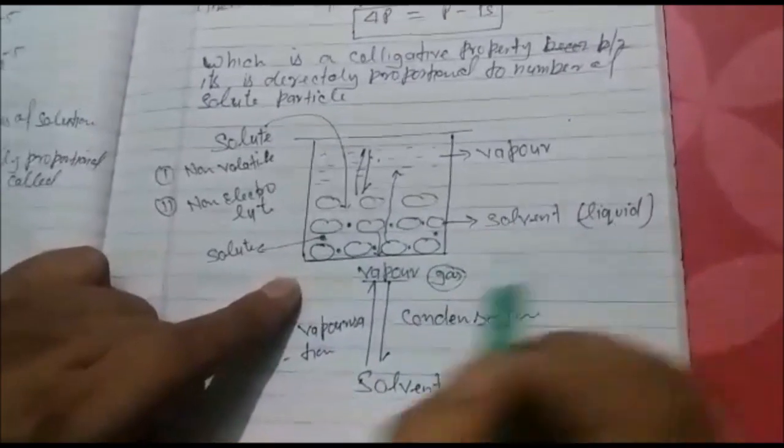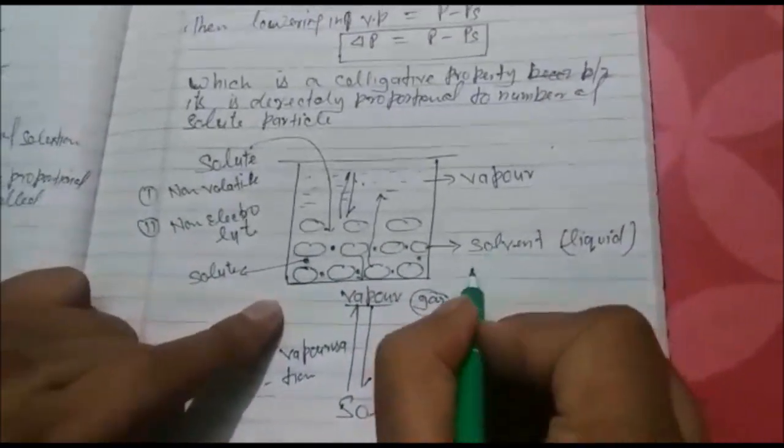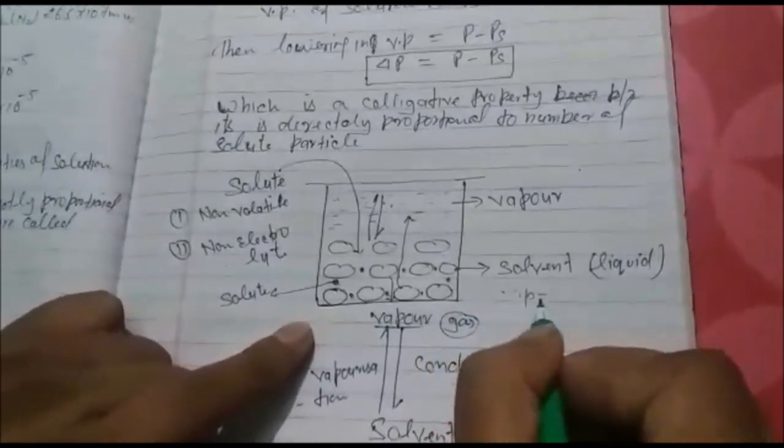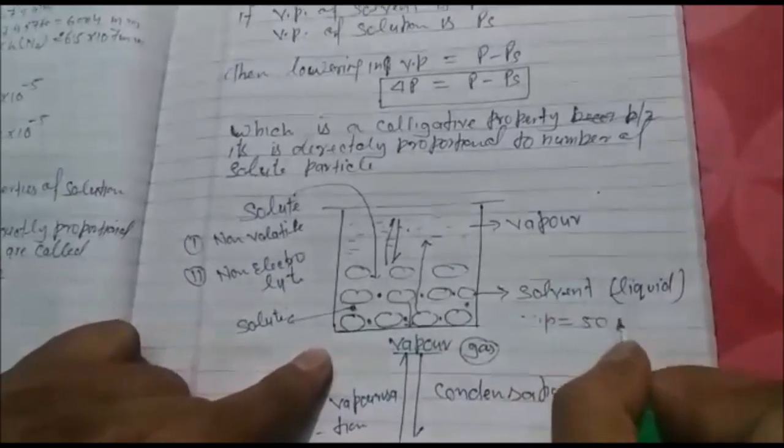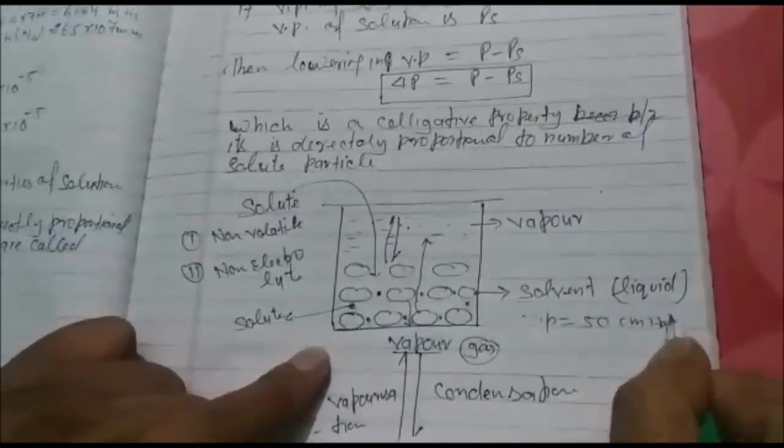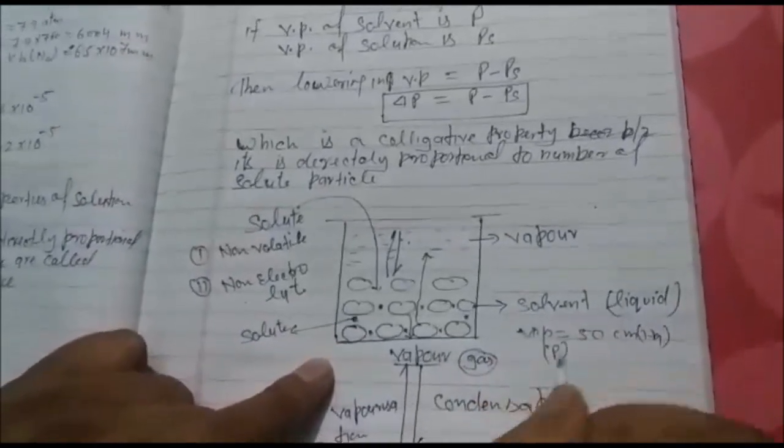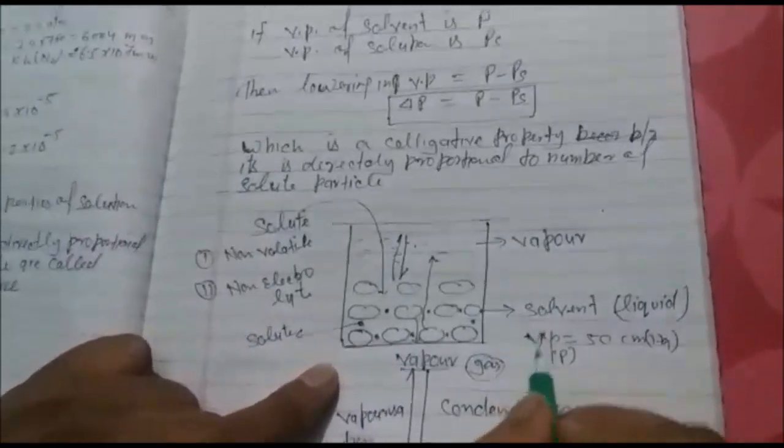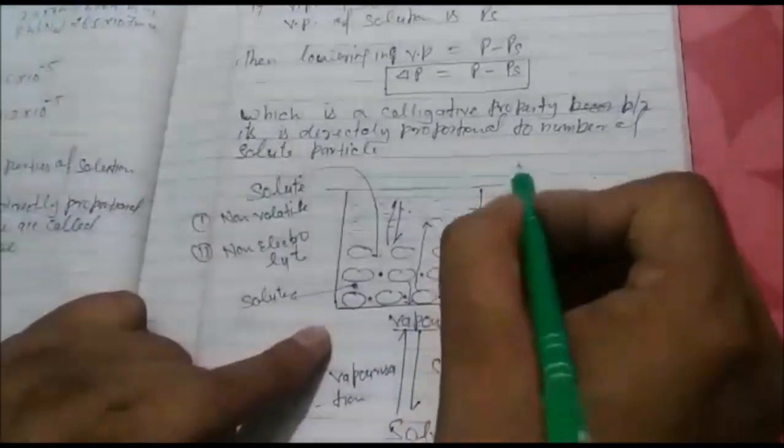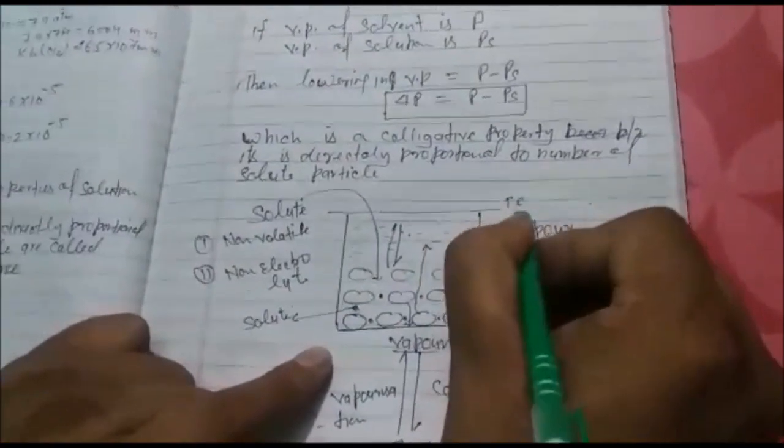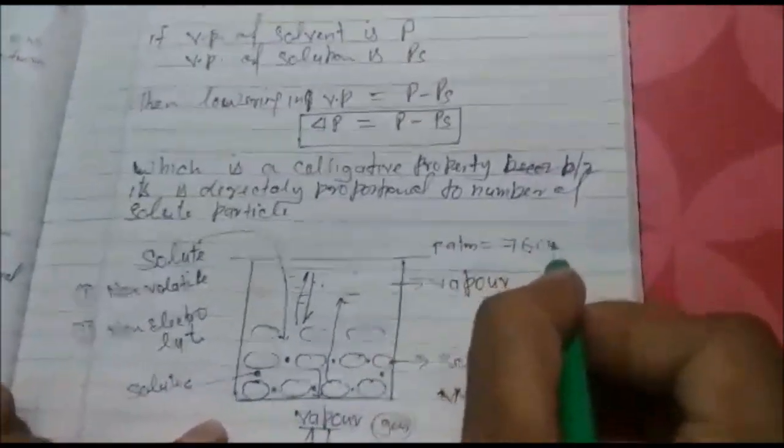which are liquid in the state. Let vapor pressure is 50 cm Hg. This is vapor pressure of solvent, you can say P. Vapor pressure of solvent P is equal to 50 cm. Atmospheric pressure is 1 atm, 1 atm is equal to 76 cm Hg.